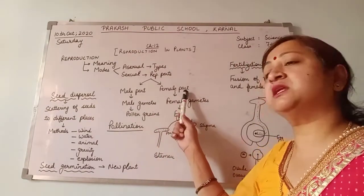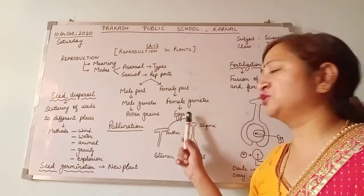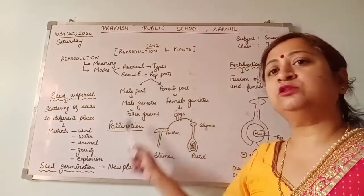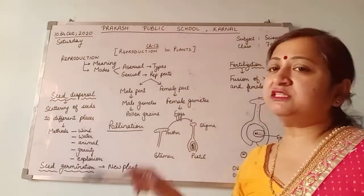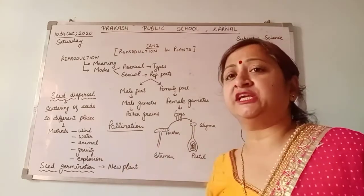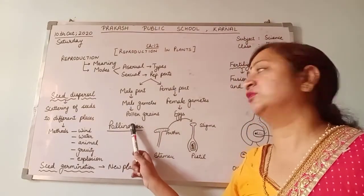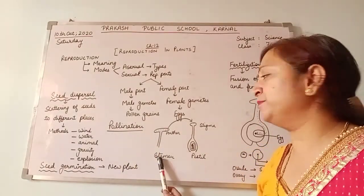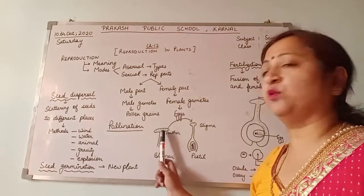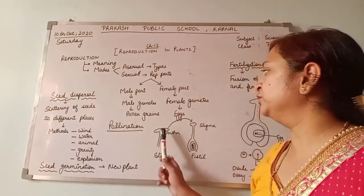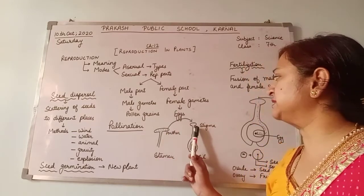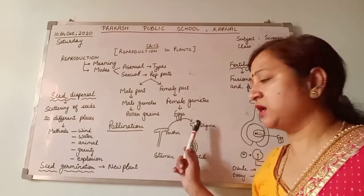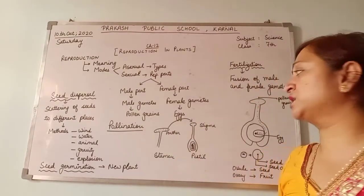While the female part produces female gametes which are known as eggs. So after both of them produce their gametes, we studied about pollination. Pollination means when pollen grains are transferred from stamen to pistil. Stamen is the male reproductive part, where the anther produces pollen grains, and they go to the stigma of the pistil.